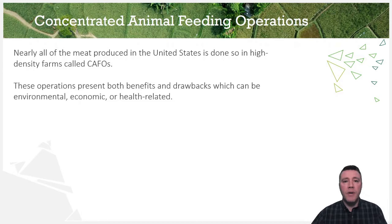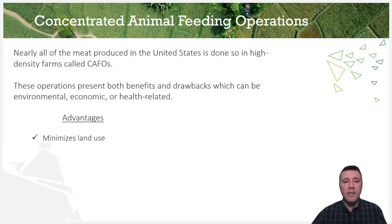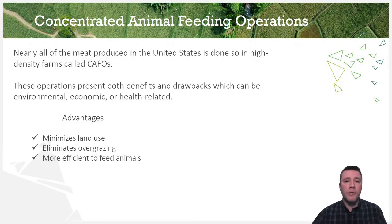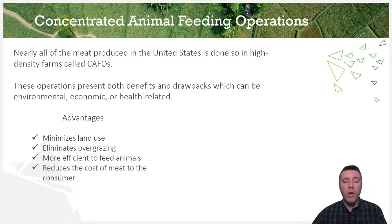High-density animal feeding operations have both benefits and drawbacks. The most direct advantage of a CAFO is that substantially less land is used to raise the animals, leaving that land available for other uses, or perhaps none at all as a nature preserve. They also eliminate the damage caused by overgrazing. Having the animals contained in a relatively smaller space makes it far more time-efficient when it comes to feeding them. And perhaps the most significant advantage — arguably the reason why CAFOs exist — is the cheaper cost of production and therefore lower cost to the consumer.